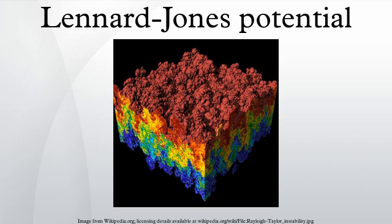The truncated Lennard-Jones potential: to save computational time, the Lennard-Jones potential is often truncated at a cut-off distance of r_c equals 2.5σ. At r_c equals 2.5σ, the Lennard-Jones potential V_LJ is about 1/60th of its minimum value ε. Beyond this distance, the truncated potential is set to zero. To avoid a jump discontinuity at the cut-off, the LJ potential must be shifted upward a little so that the truncated potential would be zero exactly at the cut-off distance.